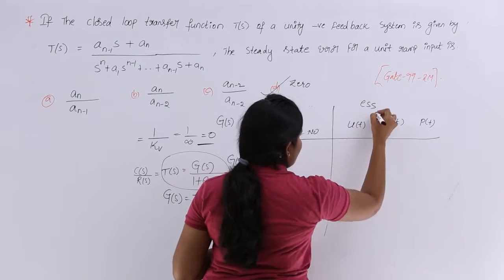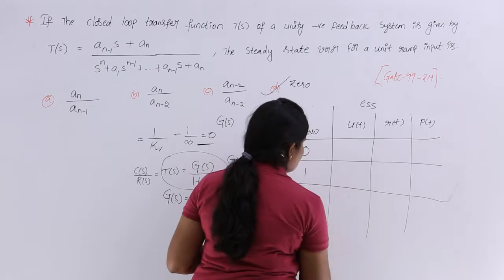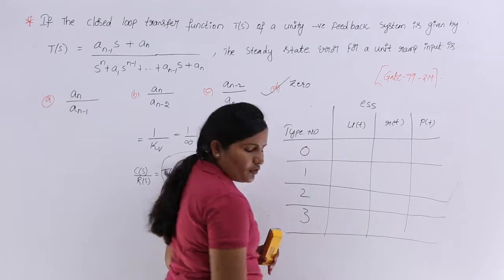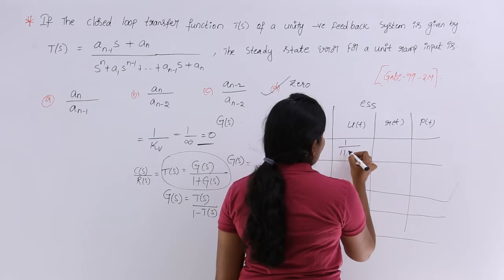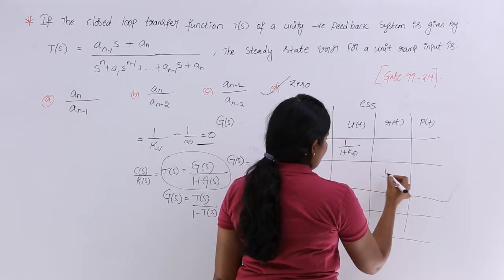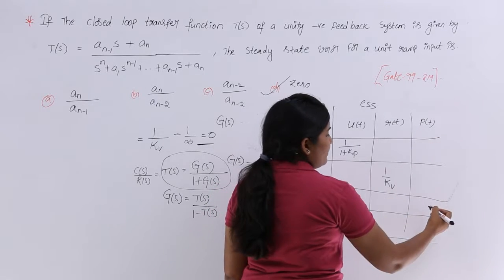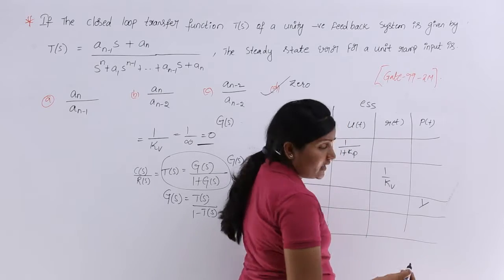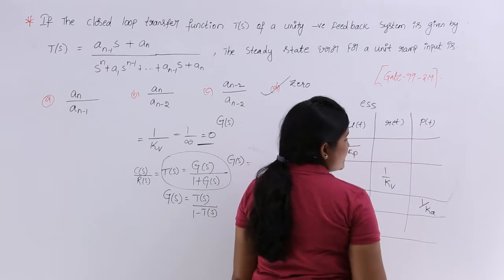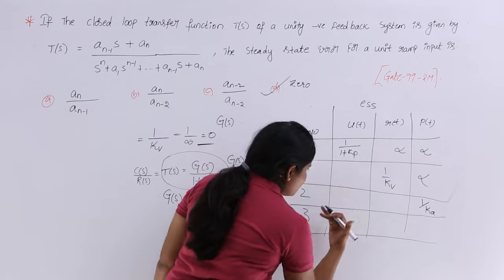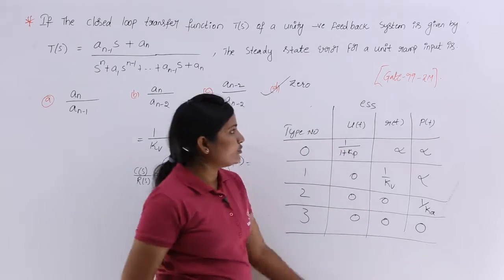For the diagonal entries: type 0 → unit step gives 1/(1+Kp); type 1 → ramp gives 1/Kv; type 2 → parabola gives 1/Ka. All entries above the diagonal (higher-order inputs for lower-type systems) give infinity. All entries below the diagonal (lower-order inputs for higher-type systems) give 0. For type 3 or greater systems, ESS = 0 for all input types.